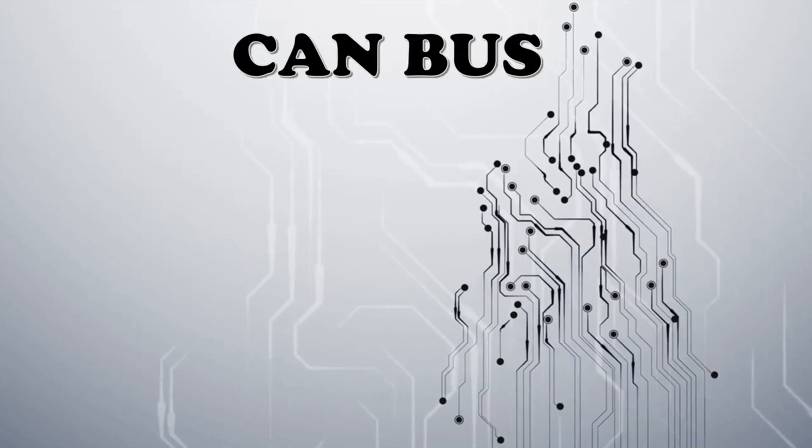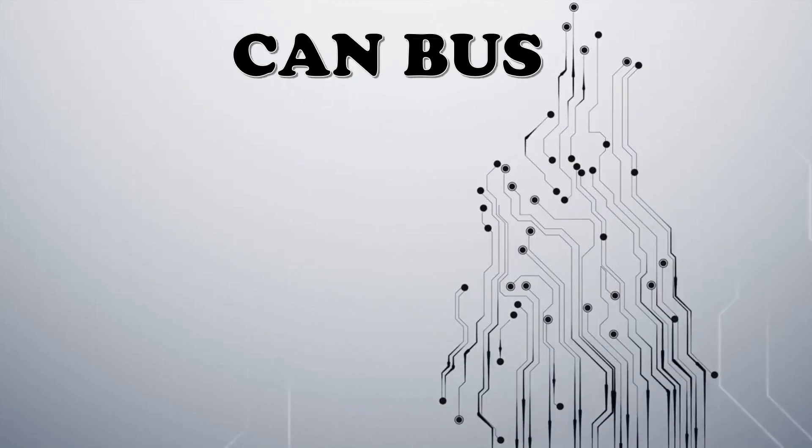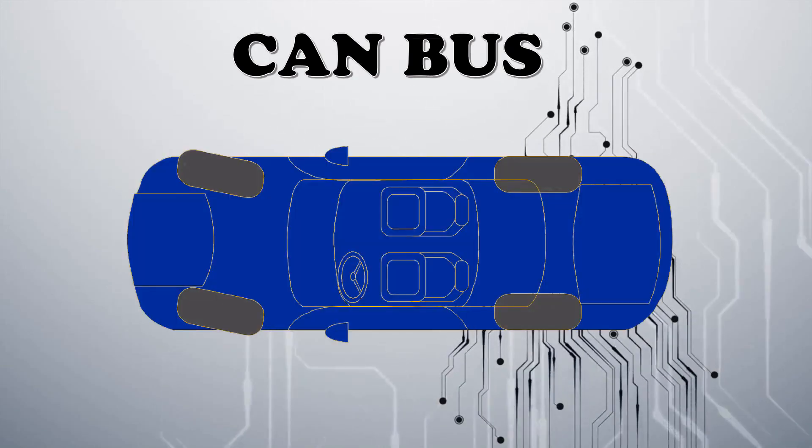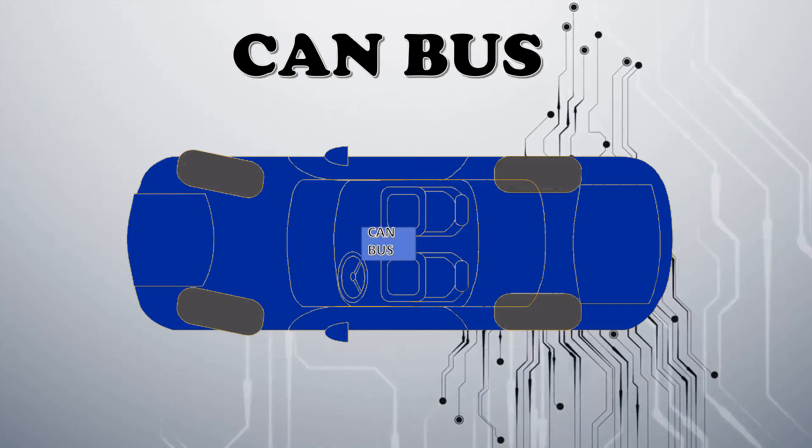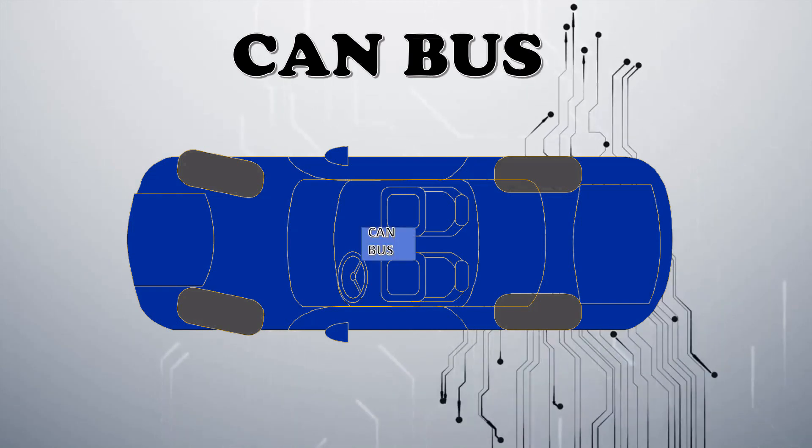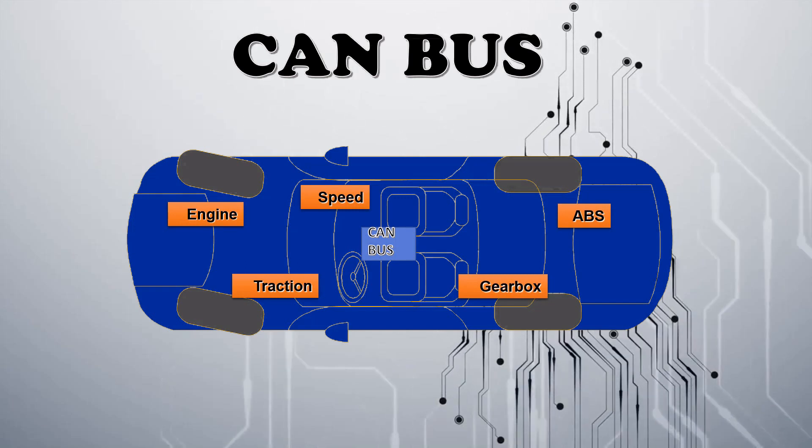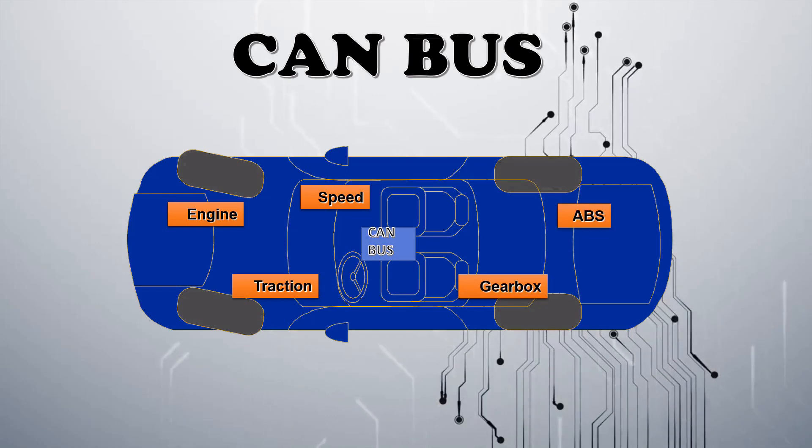Let's see the CAN bus representation in a system. We will take a car as an example for it. In a car, you will see different CAN nodes: ABS, Gearbox, Traction, Engine and Speed. All these are called as CAN nodes.